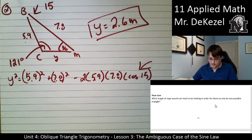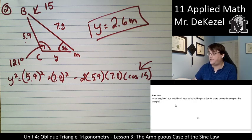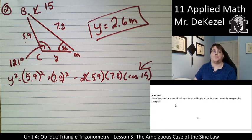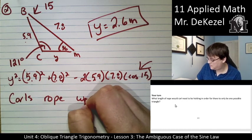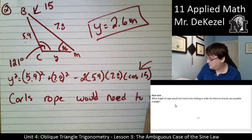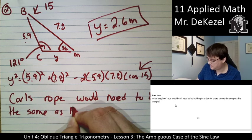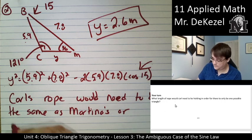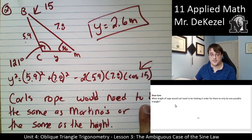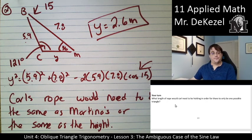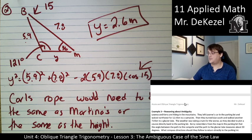Your Turn: what length of rope would Carl need in order for there to be only one possible triangle? For there to be only one possible triangle, Carl would need to be holding either the exact same length as Martina — 7.8 meters — or a rope equal to the height of the triangle, 4.858 meters. Either the same length as Martina's rope or the same length as the height gives exactly one solution.